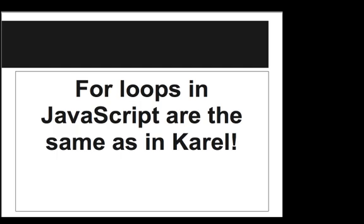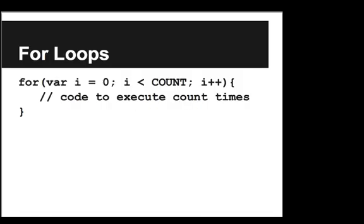So first, for loops in JavaScript are the same as they are in Carol, but now we know enough to demystify the different parts to understand what the syntax of a for loop means. So if you remember from Carol, a for loop looks like this. We write for var i equals zero, semicolon, i is less than count, i plus plus, and count is the number of times that we want to execute the code that appears between the curly braces.